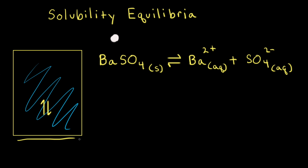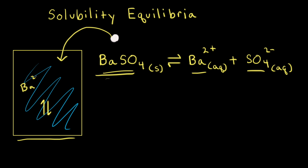Let's say we have a beaker of distilled water at 25 degrees Celsius, and to the beaker we add some barium sulfate. Barium sulfate is a white solid. A small amount of the barium sulfate dissolves in the water and forms barium 2+ ions in solution and sulfate ions in solution. But most of the barium sulfate remains undissolved, sitting on the bottom of the beaker.